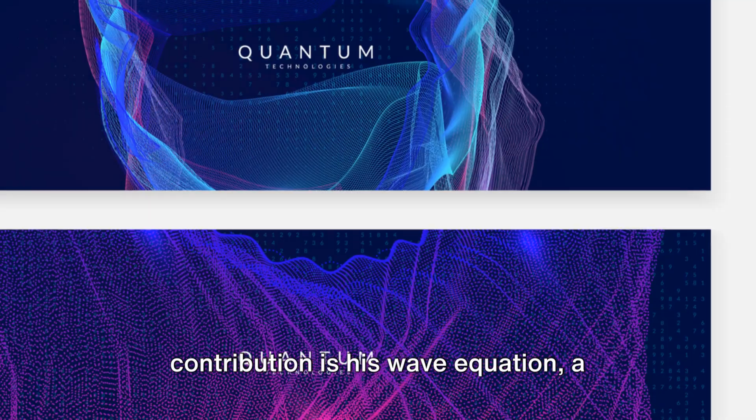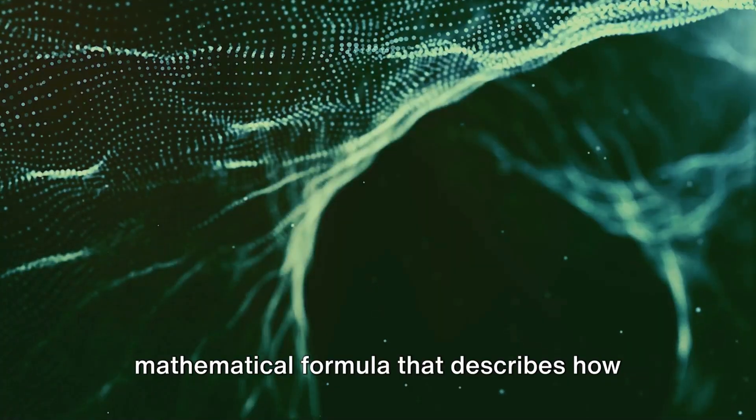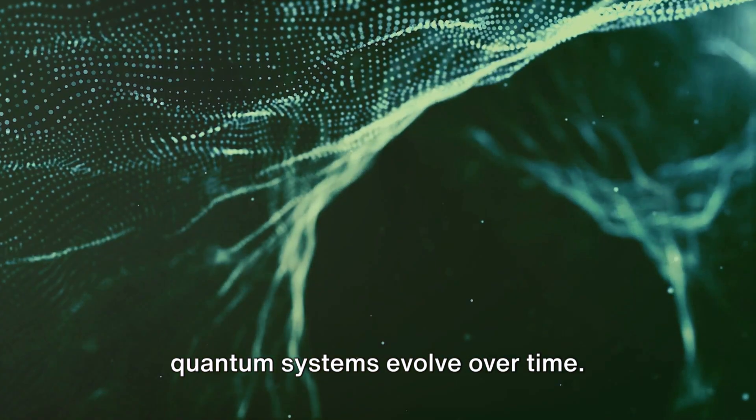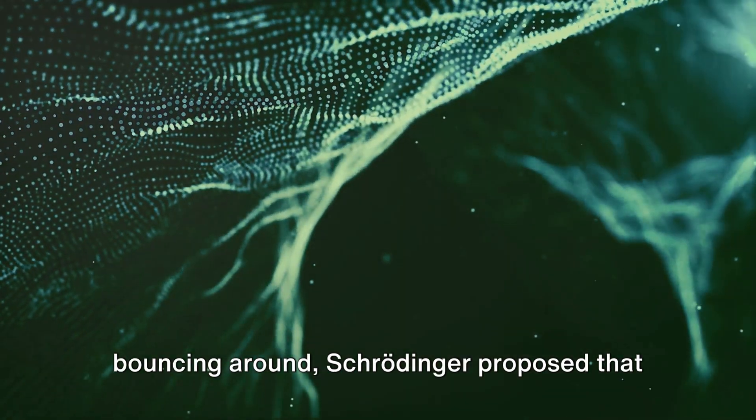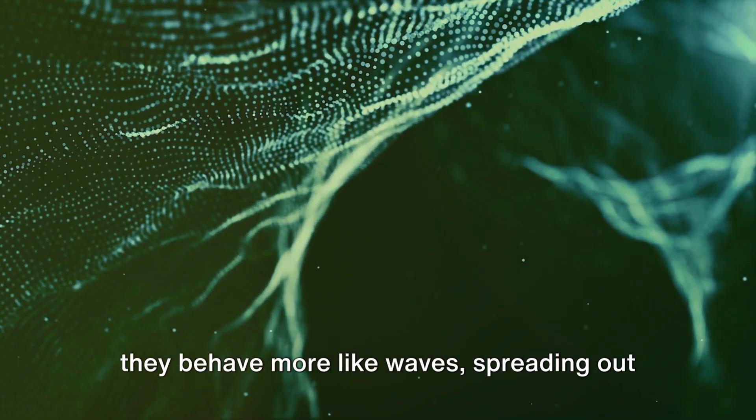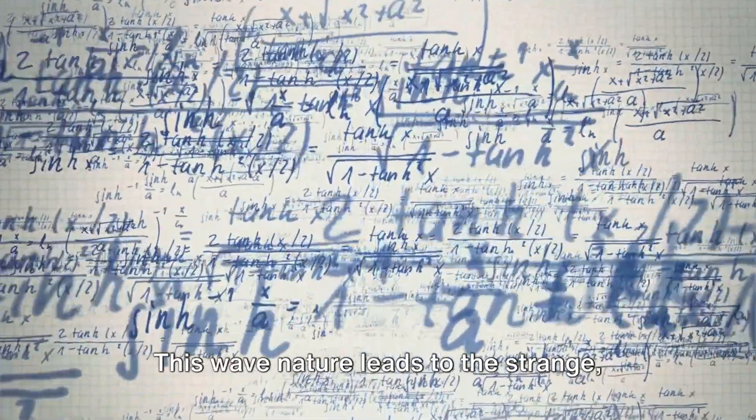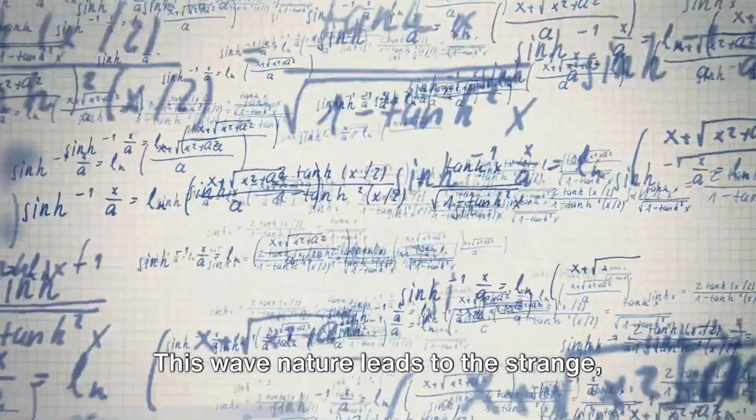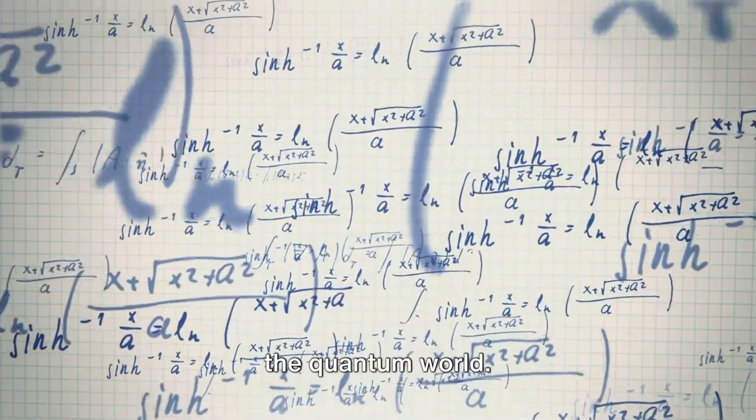Schrödinger's most significant contribution is his wave equation. A mathematical formula that describes how quantum systems evolve over time. Instead of seeing particles as tiny balls bouncing around, Schrödinger proposed that they behave more like waves, spreading out and interfering with each other. This wave nature leads to the strange, counterintuitive phenomena that we see in the quantum world.